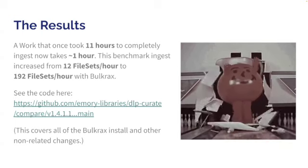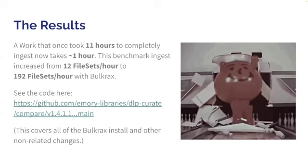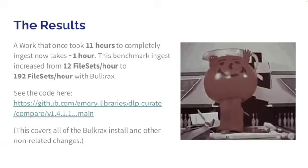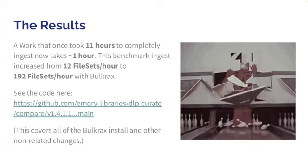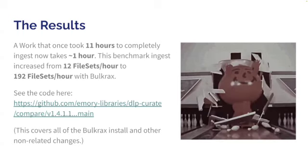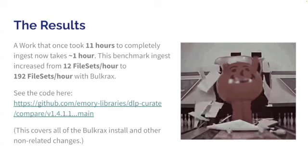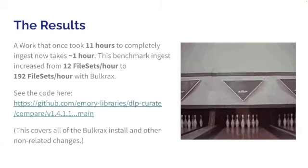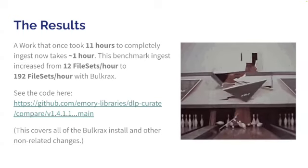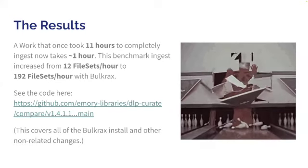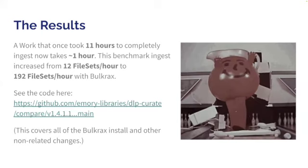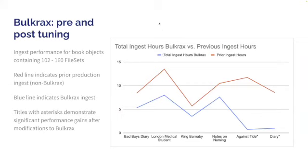We did that, and we found beautiful results. The work that once took 11 hours to complete now takes less than an hour. We increased our file sets per hour up to 192, compared to 12. The gist of the code is available via a link in this slide. I do apologize that because we were working with two branches simultaneously, there is some intermixed code, but we have provided notes in each of our commits to label the Bulkrax work.